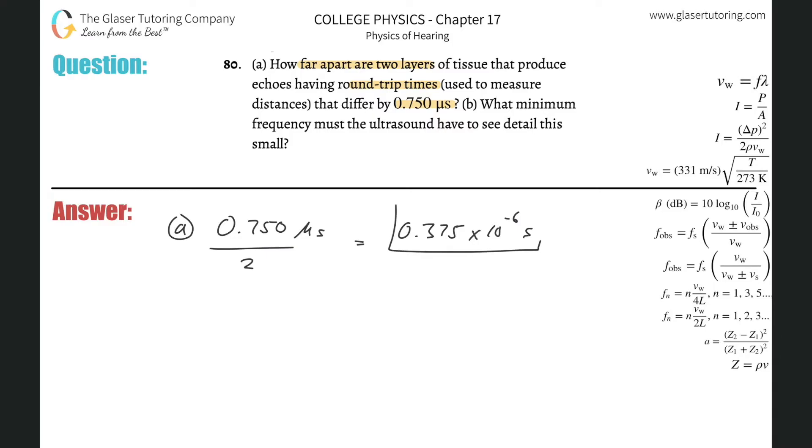Here's the time it takes for one of the trips. I can use a simple velocity formula: velocity equals the change in distance divided by the change in time. This is the time difference of the echo, and that time difference relates to the difference in distances of the two layers.